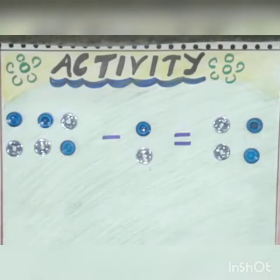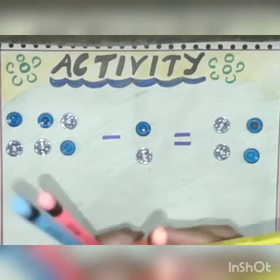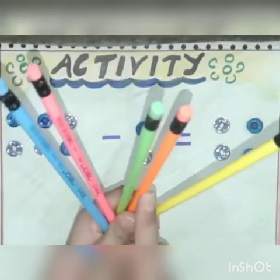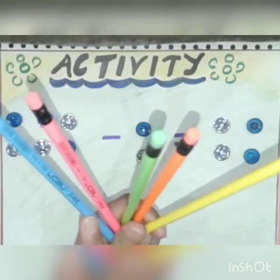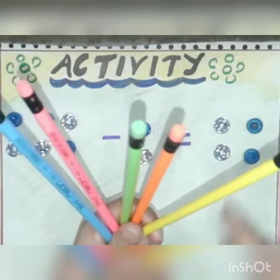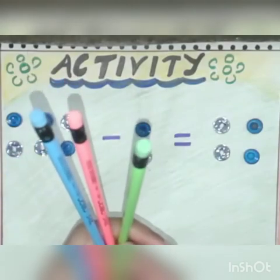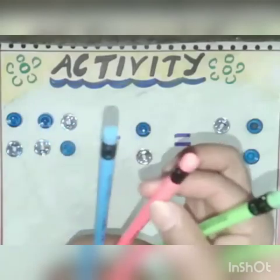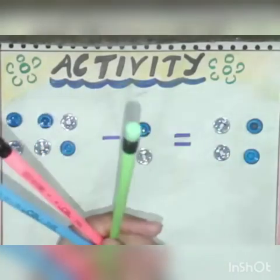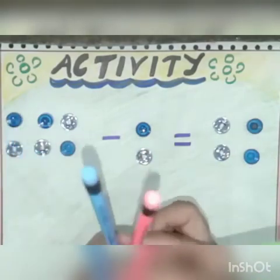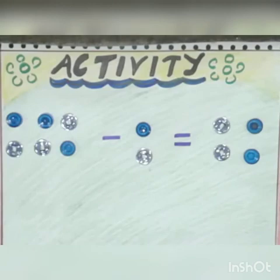Now let's take another example. Children, I have 5 pencils in my hands — yellow, orange, green, pink, and blue. Now if I give 2 pencils to my sister, how many pencils are left with me? 1, 2, 3. It means 5 minus 2 is 3. I hope you have understood this activity and you can also perform these types of activities at home.